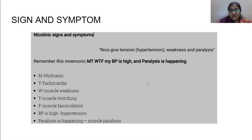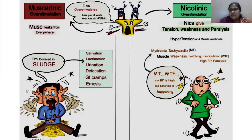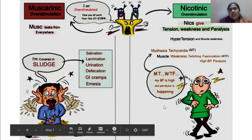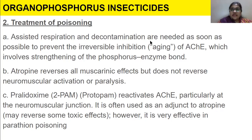When the muscarinic receptors are overstimulated, the person would exhibit teary eyes and excessive saliva, emesis, and defecation as discussed. When the nicotinic receptors are also activated, you see trembling, hypertension, and all those symptoms. If you combine both of these in one person, just imagine the extreme toxic effect.